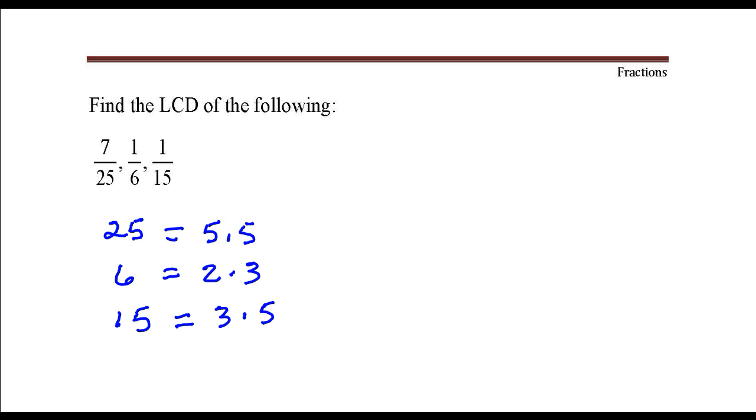So your factors are 2, 3, and 5. The greatest number of times that a 2 occurs is right here, just occurs once.